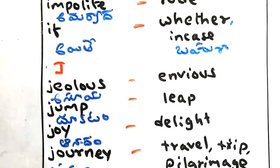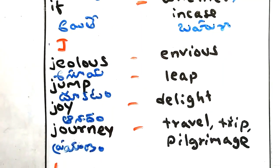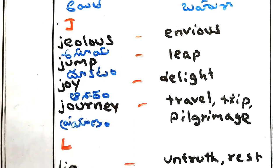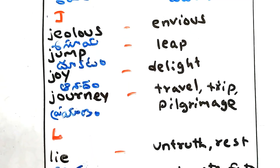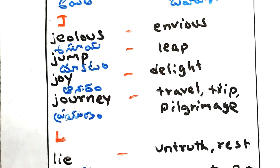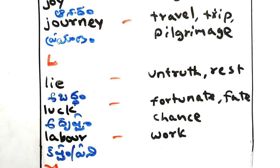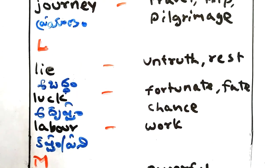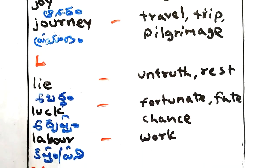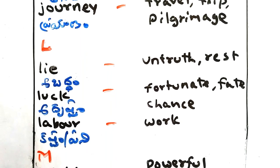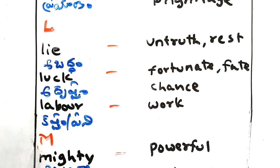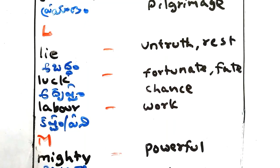Jealous - asuya, envious. Jump - dookatam, leap. Joy - anandam, delight. Journey - prayana, travel, trip. Lie - abaddam, untruth, rest. Luck - adrushcham, fortunate, fate, chance. Labor - kastam, pani, work.